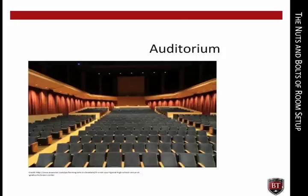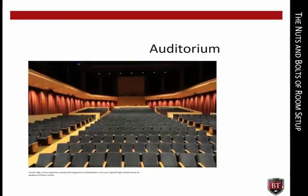Auditorium — also sometimes referred to as theater style — is typically rows of seats in blocks separated by vertical and horizontal aisles from the crowd's perspective. Although theater style seating may have tables or desks, auditorium seating typically does not. This style is ideal for events where you need to accommodate a lot of people who will focus on a stage for entertainment purposes, ceremonies, or presentations that do not require the audience to do any more than listen and watch.